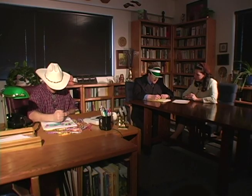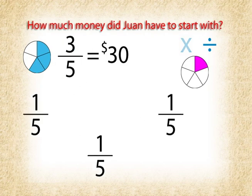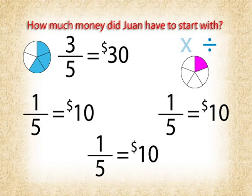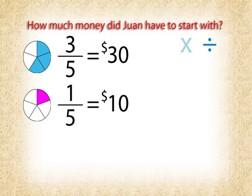Five. Perfect. So if five-fifths is the whole, and we know that three-fifths is equal to thirty dollars, what can we do to figure out what one-fifth is? Divide by three. That's right, Tex. We need to divide both the three-fifths and the thirty dollars by three. So three-fifths divided by three is one-fifth, and thirty dollars divided by three is ten dollars. So one-fifth of his money is equal to ten dollars. But we can't stop yet.